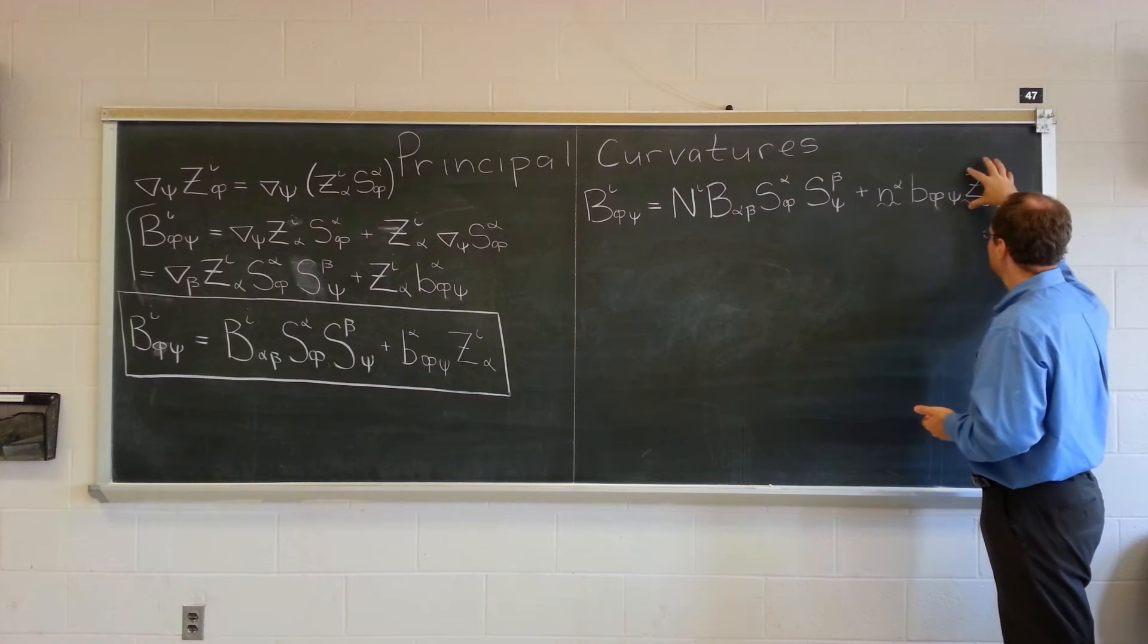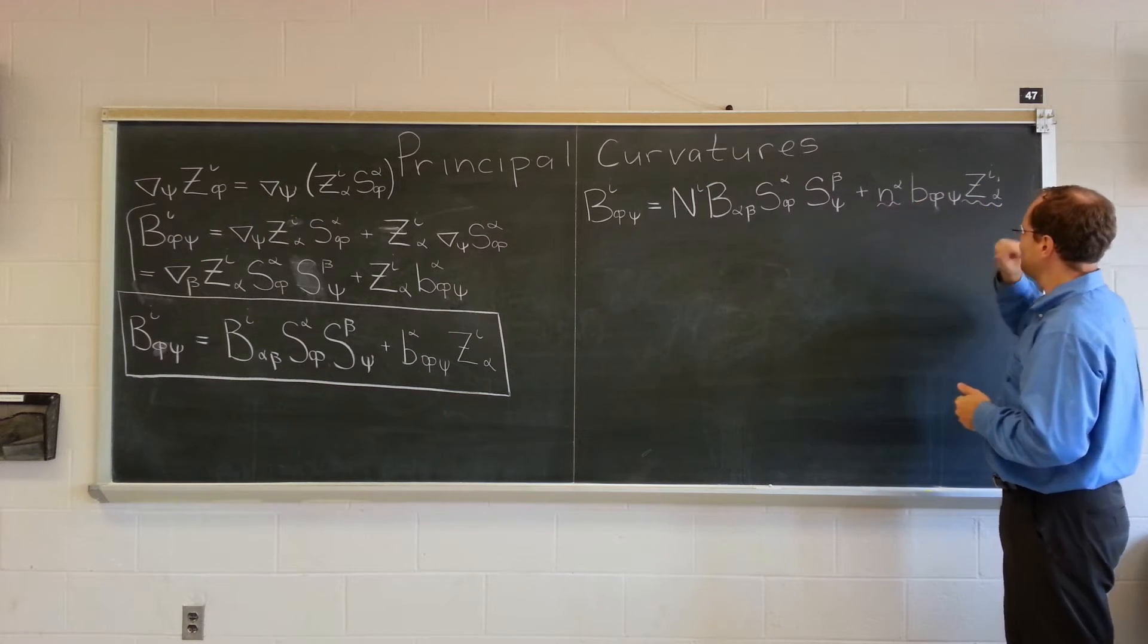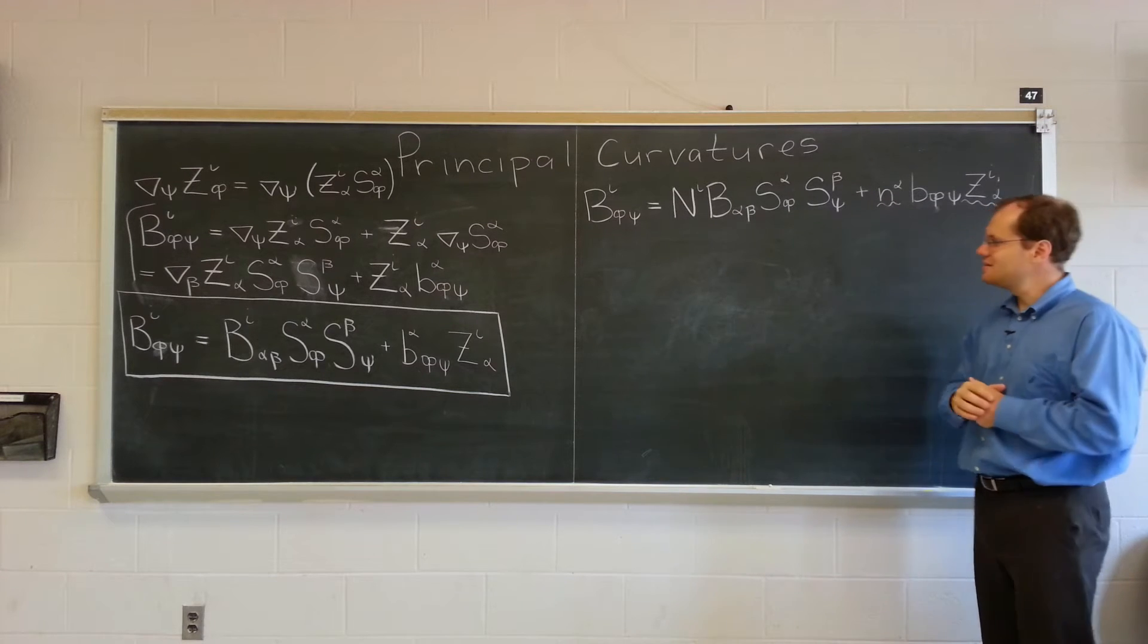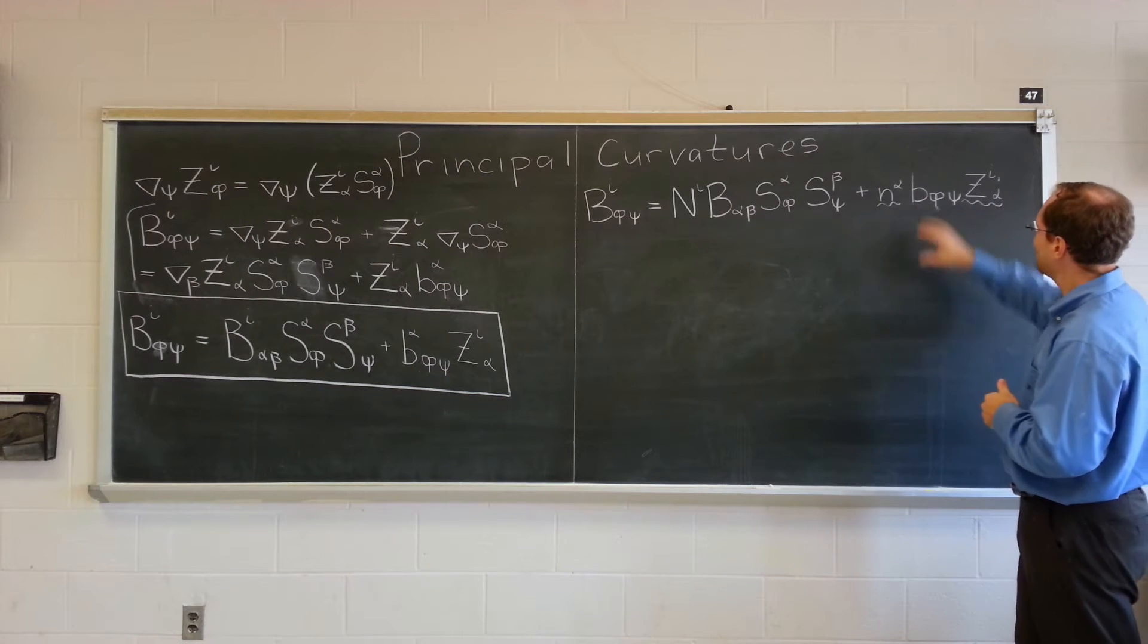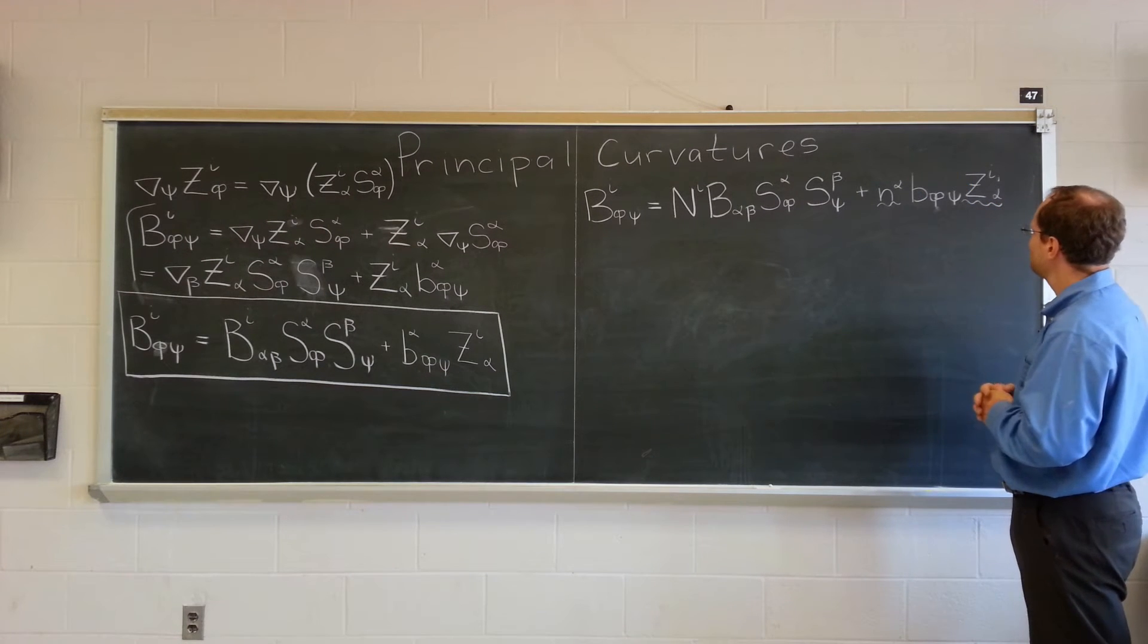And of course, we did a whole lecture on how the shift tensor does it. So this is little n i. And this is our familiar curvature tensor, but for the new embedding. So, here's what we're going to do. n i will appear in the next step. But here's what we're going to do. We're going to raise the Greek index and contract.